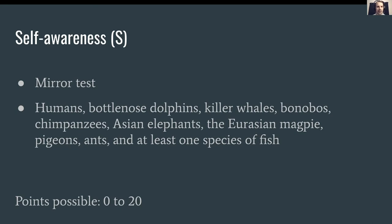For Self-Awareness: it would be difficult to identify with pain or pleasure without some sense of self. One way to measure this is the mirror test — placing a dot on an animal's forehead and seeing if it tries to remove it when shown a mirror. Humans, dolphins, killer whales, bonobos, chimpanzees, Asian elephants, magpies, pigeons, ants, and at least one species of fish have passed this test, while cats and dogs interestingly cannot. The test isn't sufficient on its own — a blind human wouldn't pass it — but we can aim for a possible 20 points in this category.